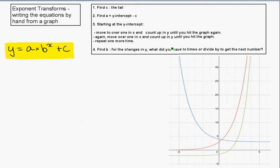Exponent transforms. Hopefully you guys have watched the video from Desmos.com where I illustrated what the different letters within the generic formula for an exponent do. You should be familiar with the fact that C is going to be your shift up/down, and this is also the tail, which is actually an asymptote.